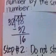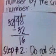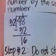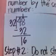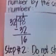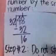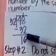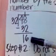Now, there is only one 32 in 48. Therefore, 48 divided by 32 is 1. We subtract: 48 minus 32 is 16.